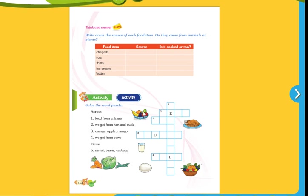Write down the source of each food item. Do they come from animals or plants? Chapati comes from plants, it is cooked. Rice comes from plants. Fruits come from plants. Ice cream, which is made from milk, and butter also made from milk. Okay, so let's come down here with an activity also.